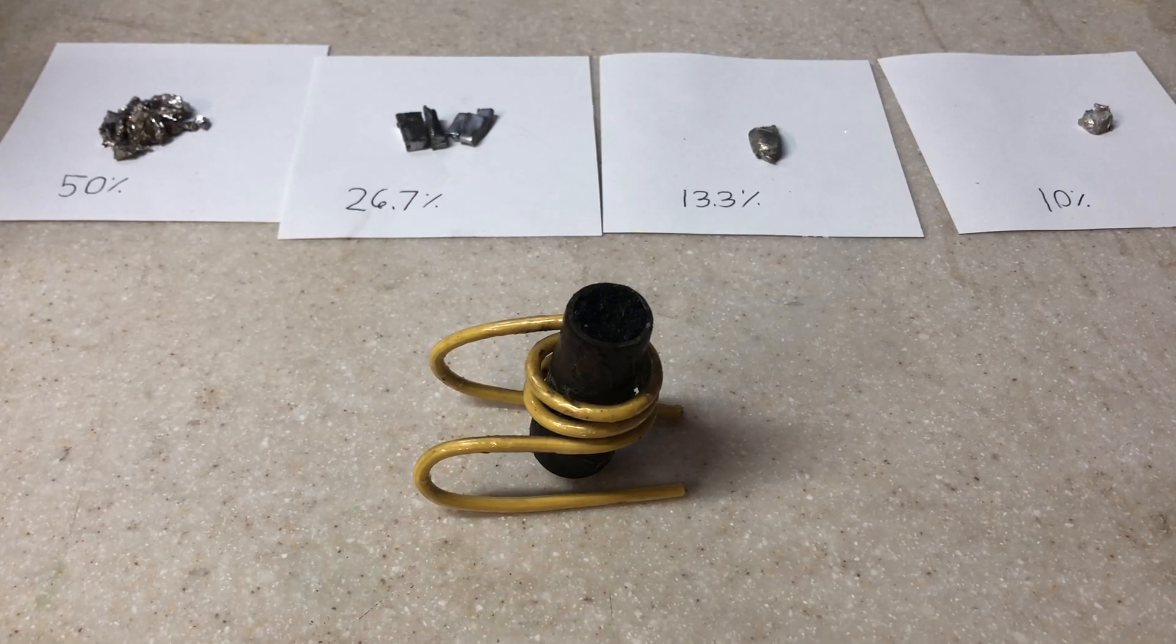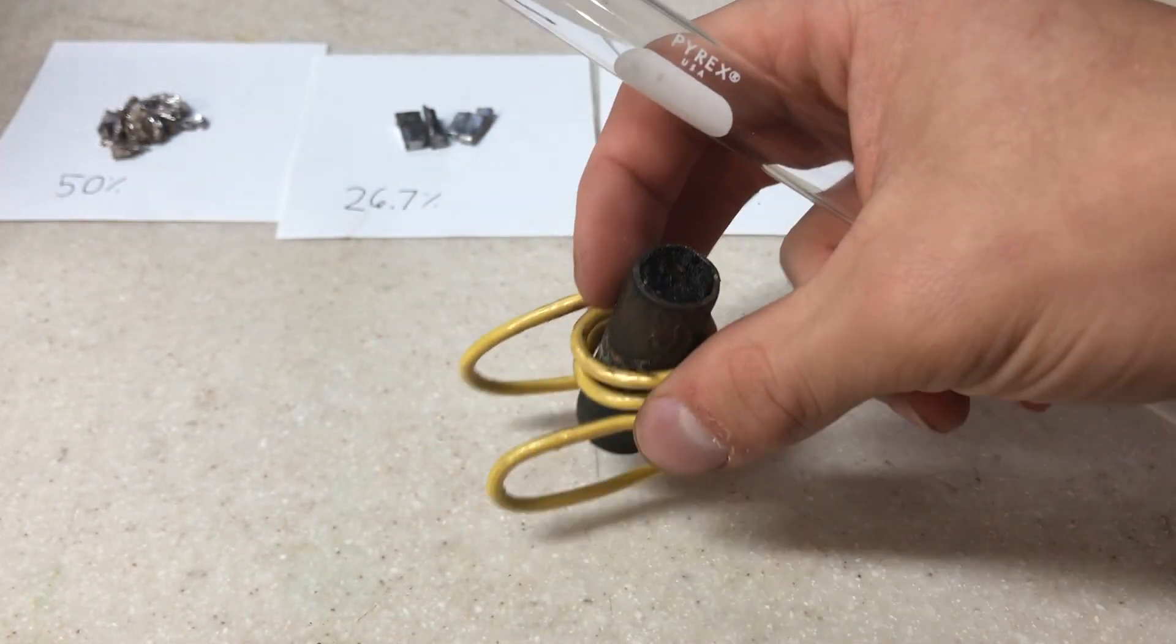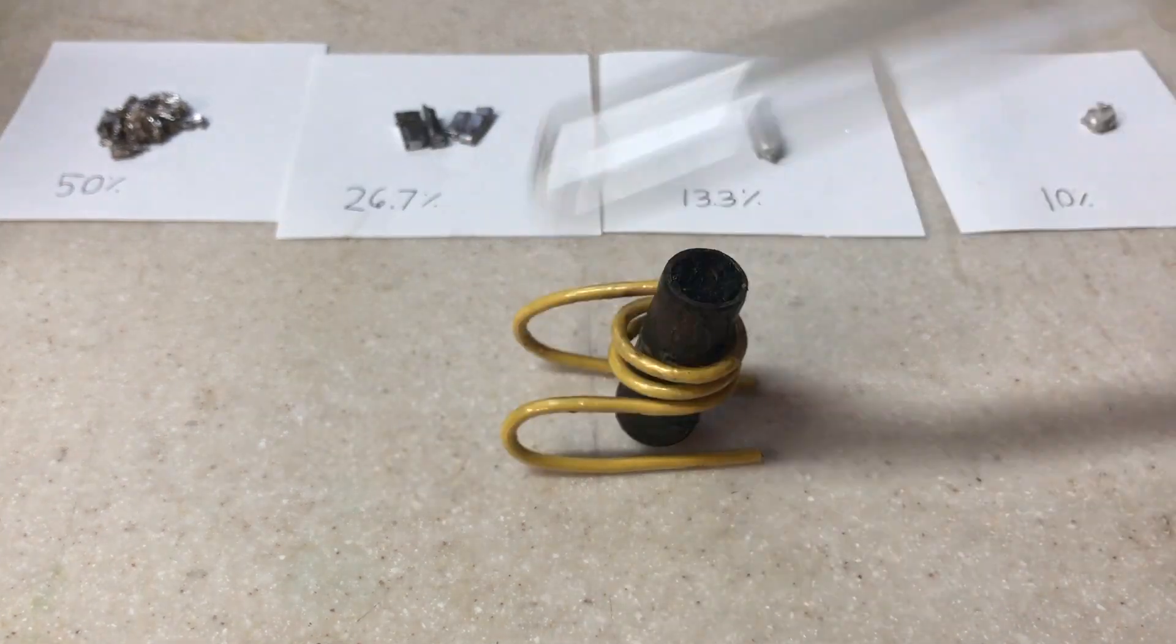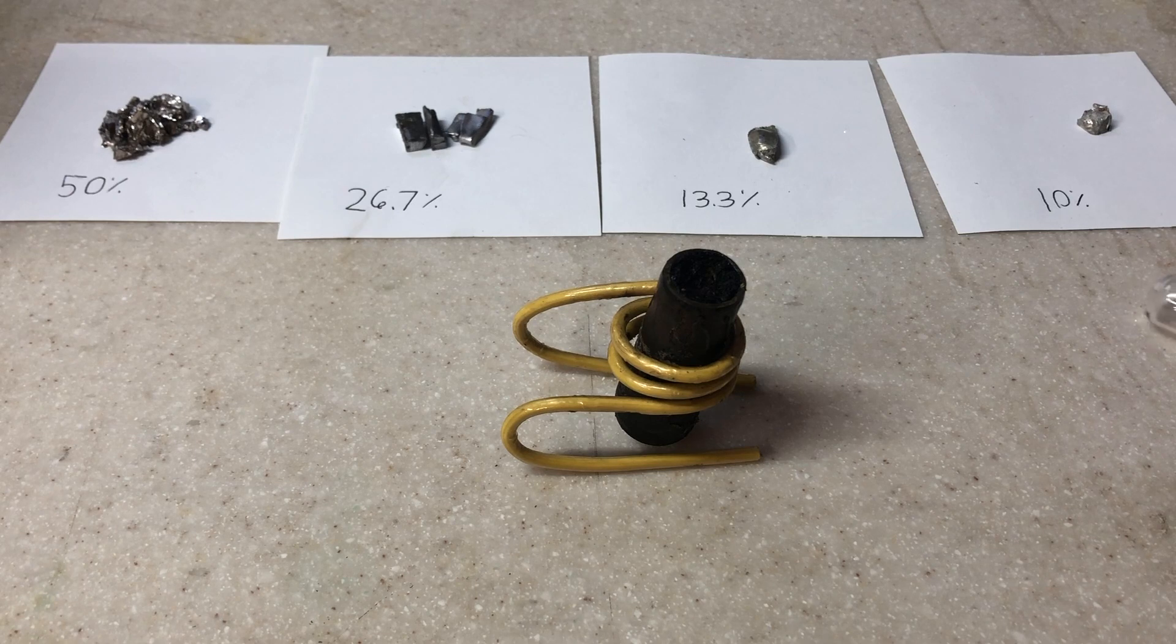To melt and make the alloy, I'm going to use a denatured alcohol torch and a glass test tube. I'll drop each element in and heat them up until they melt and form the alloy.